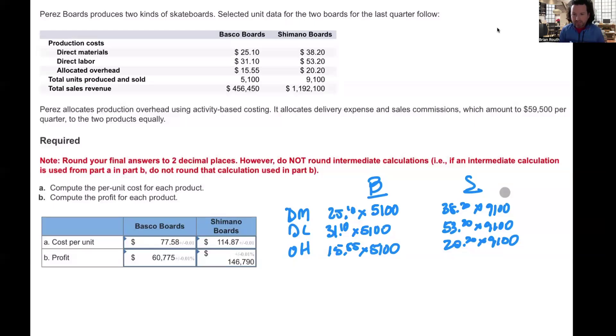So I went ahead and put all this information here really quickly. I haven't multiplied them out yet. I absolutely think you can do that, so I'll let you do that on your own. But in the story, it tells us that delivery expense and sales commissions, which add up to $59,500, were applied to the products equally. So if we divide that $59,500 by 2 or multiply it times 50%, you should get $29,750 getting allocated to each product. So that's for delivery and sales commissions expense.